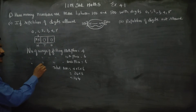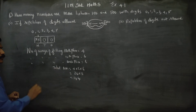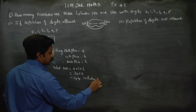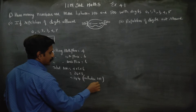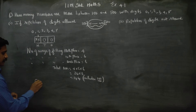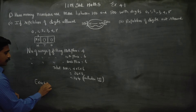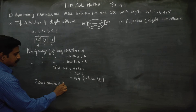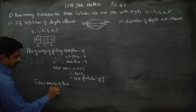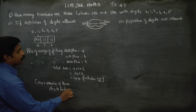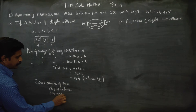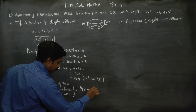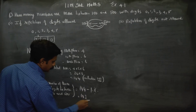Therefore, the exact number of 3-digit numbers between 100 and 500 is equal to 144 minus 1. The answer is 143.